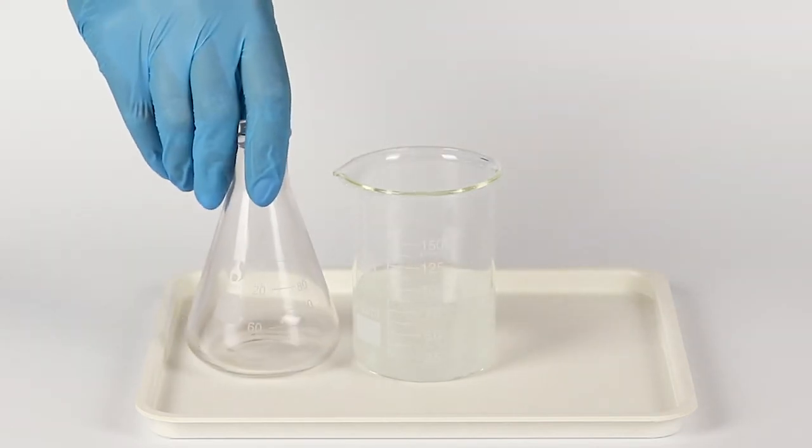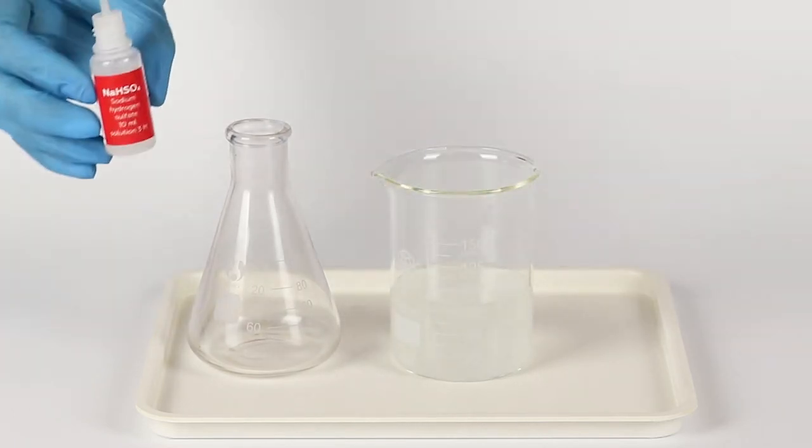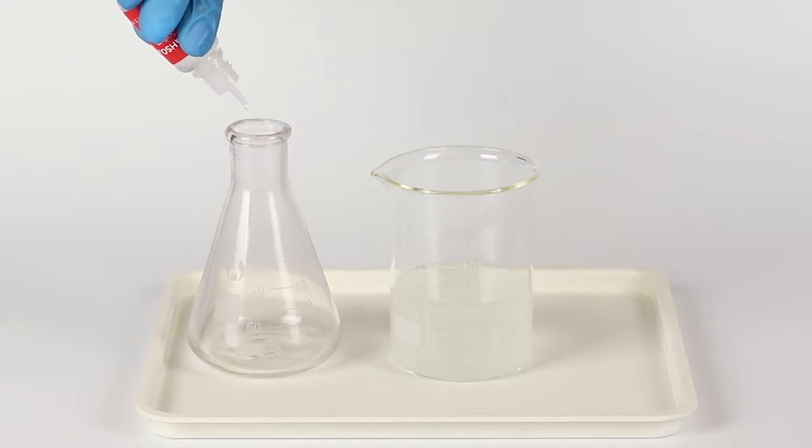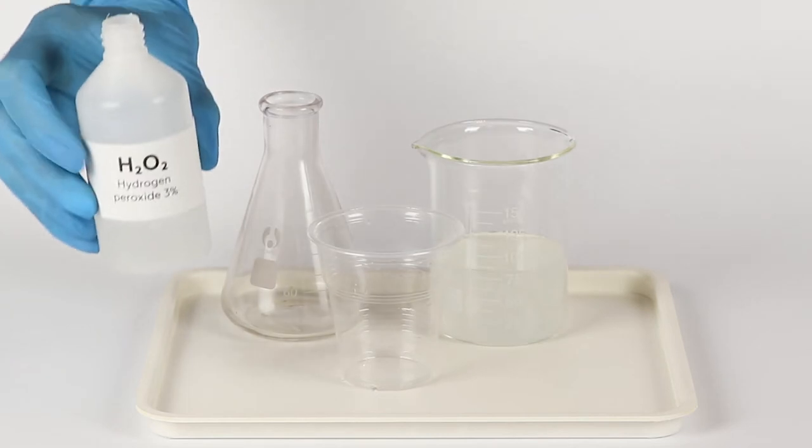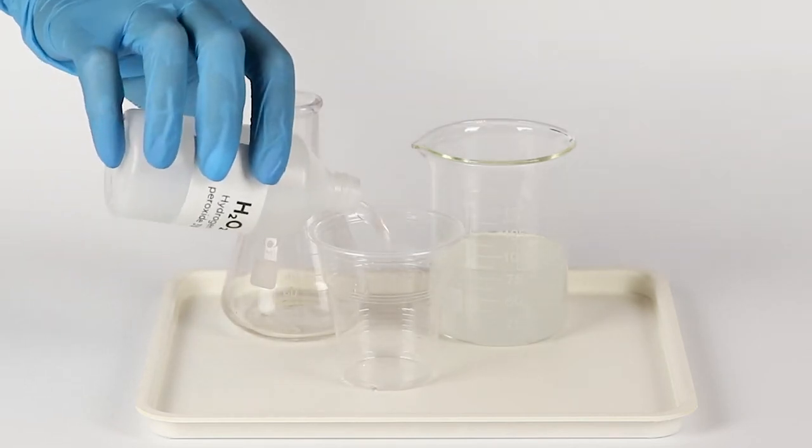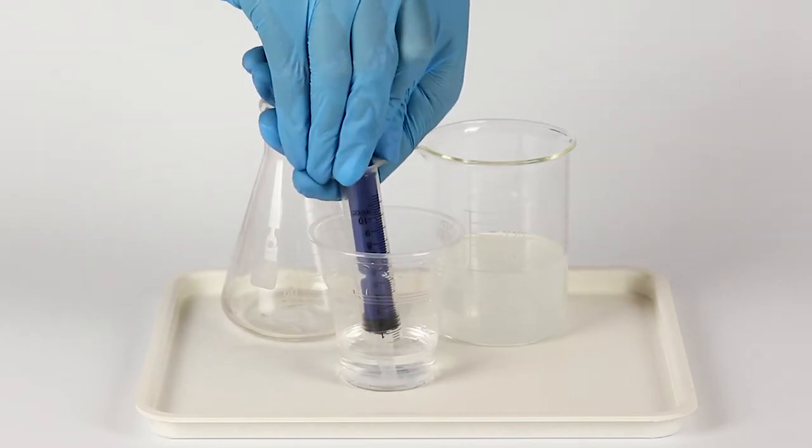Prepare the second solution, which will contain the oxidant, hydrogen peroxide. Take the flask. Measure 10 drops of sodium hydrogen sulfate solution. Use a syringe to add 10 milliliters of hydrogen peroxide solution.